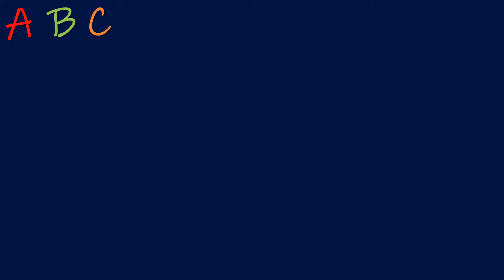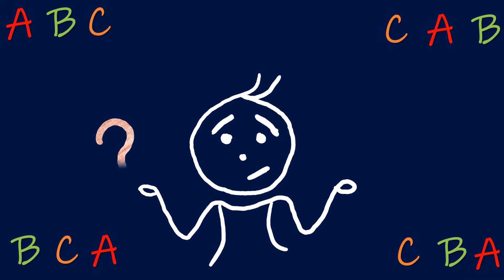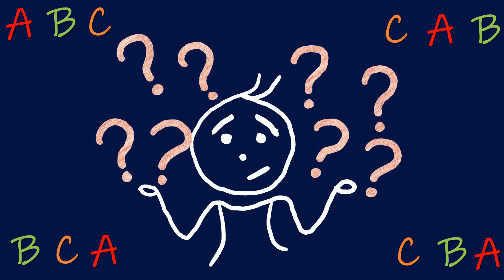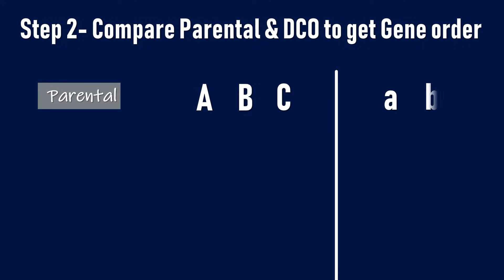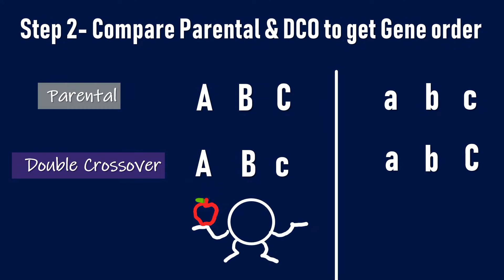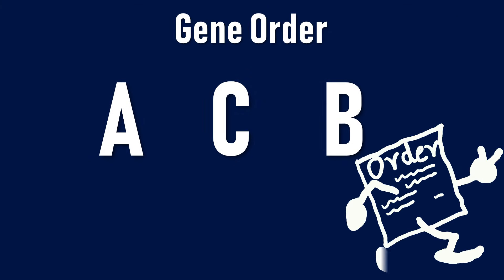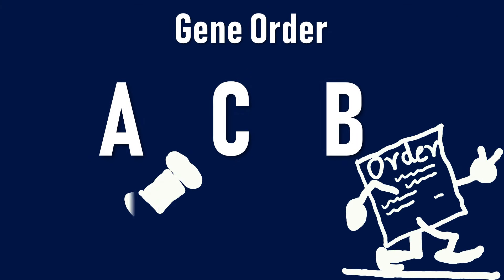The question mentions the genes as A, B and C, but the actual gene order can be different from ABC. To find the correct gene order, we will compare the parental and the double crossover type. On comparison, we notice that the C gene does not match in the parental and the double crossover type. Thus, the C gene is present in the center between genes A and B. So the actual gene order is A, C, and B.